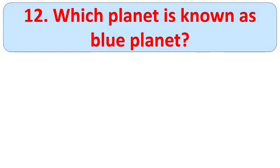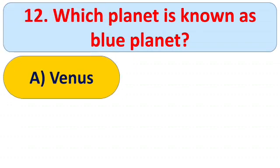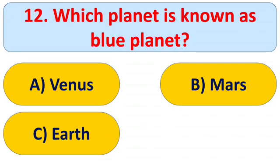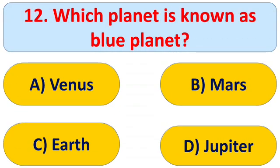Next question: which planet is known as the blue planet? Options: A) Venus, B) Mars, C) Earth, and D) Jupiter. This question is very easy — the right answer is C) Earth. Earth is also known as the blue planet because it appears blue, as two-thirds of its surface is covered by water.